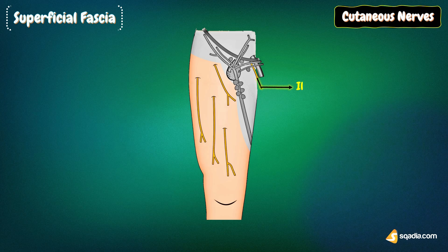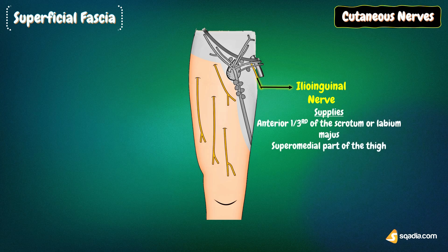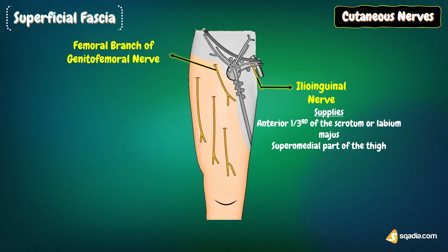The ilio-inguinal nerve emerges at the superficial inguinal ring and supplies the skin at the root of the penis, or over the mons pubis in the female, the anterior one-third of the scrotum or labium majus, and the superomedial part of the thigh. The femoral branch of the genitofemoral nerve pierces the femoral sheath and the overlying deep fascia below the midinguinal point and supplies most of the skin over the femoral triangle.